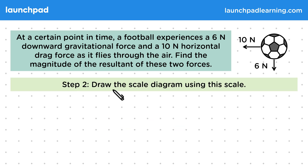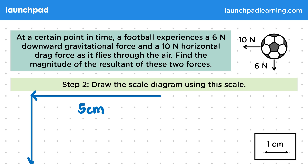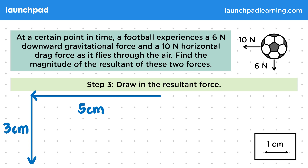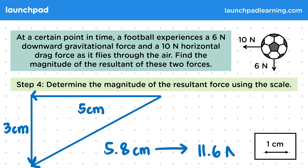For step 2, we want to draw the scale diagram using this scale. We use a scale of 1 centimetre to 2 newtons to draw our 10 newton force as a 5 centimetre arrow and the 6 newton force as a 3 centimetre arrow. For step 3, we need to draw in the resultant force. Then for step 4, we want to determine the magnitude of the resultant force using the scale. The resultant force is measured to be 5.8 centimetres, which we convert back to newtons by multiplying by 2 to give 11.6 newtons.